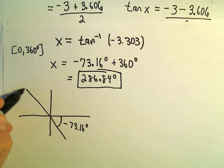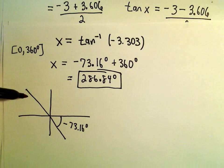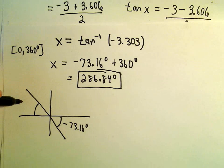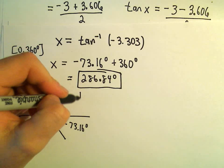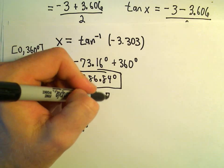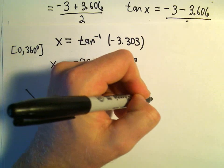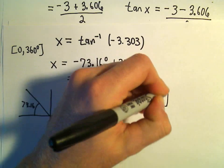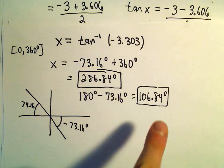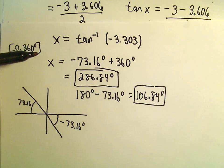Our other solution would be in quadrant 2, since tangent is also negative there. Our reference angle is 73.16 degrees, so for the quadrant 2 solution we take 180 degrees and subtract 73.16 degrees, giving us 106.84 degrees. So our degree solutions are 286.84 and 106.84 degrees.